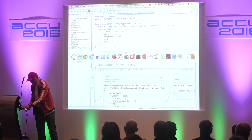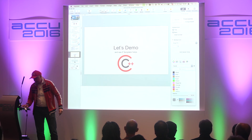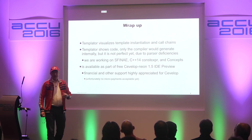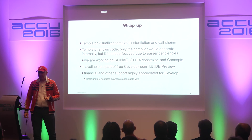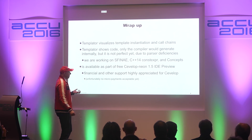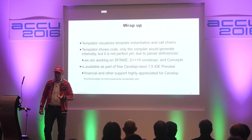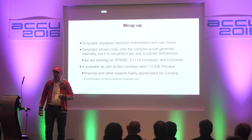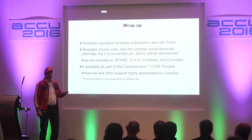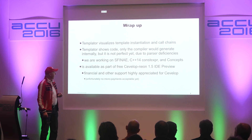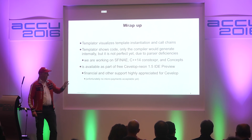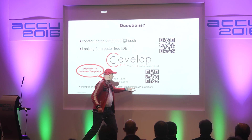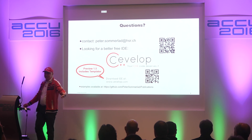That more or less concludes what I wanted to show you. Let's wrap up. We visualize the template instantiation and call chains — it's a tool for beginners to get hold of templates. It shows the code the compiler generates internally. There are other tools that plug into Clang and actually trace the template instantiations. You can use them as well; they have a more detailed view of templates but are not as interactive. We are working on supporting C++17 and things like that, but it's a lot of work. You can download it now — there or there.